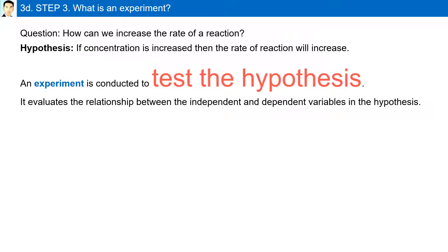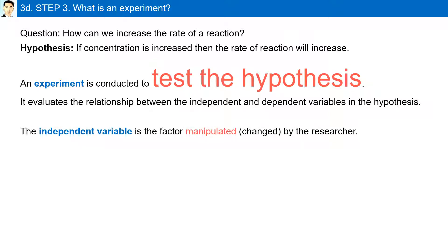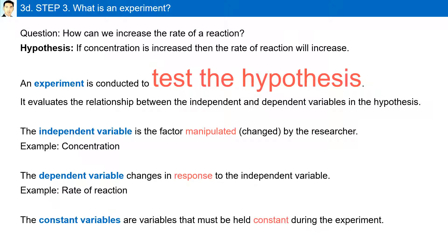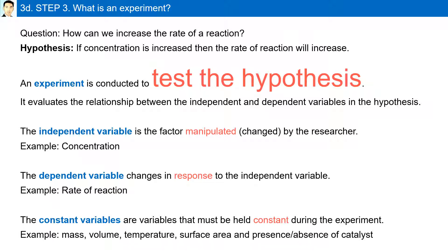The experiment evaluates the relationship between the independent and dependent variables in the hypothesis. The independent variable is the factor manipulated or changed by the researcher — in this case, concentration. The dependent variable changes in response to the independent variable — in this example, it is the rate of reaction. The constant variables must be held constant during the experiment, for example, mass, volume, temperature, surface area, and the presence or absence of a catalyst.